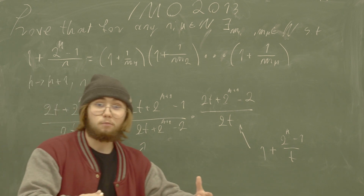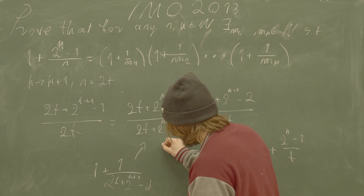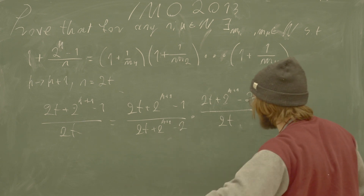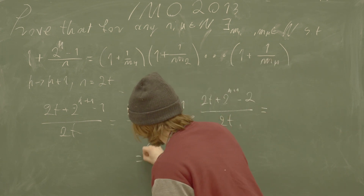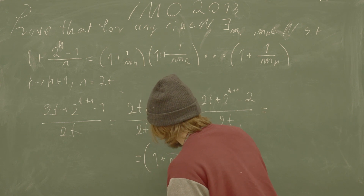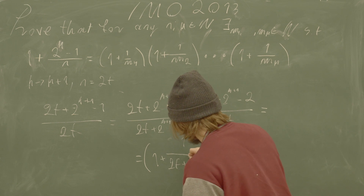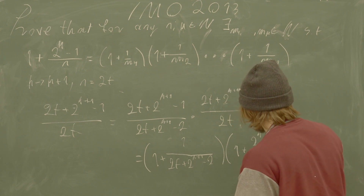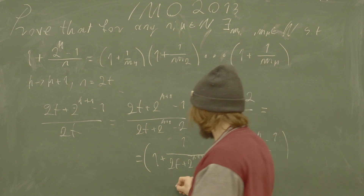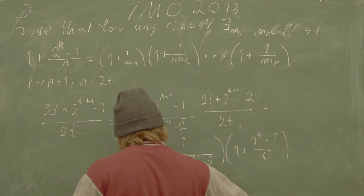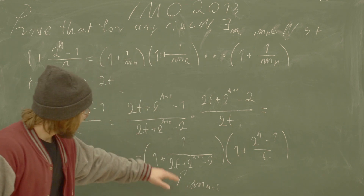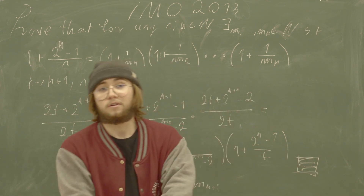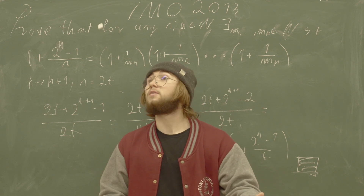So we got exactly the form we wanted: the expression becomes one plus one over two times t plus two to the power of k plus one minus two, multiplied by one plus two to the power of k minus one over t. We can use the inductive assumption here — just set the first m equal to two times t plus two to the k+1 power minus two — and I call this problem fully solved. Hope you enjoyed it, see you and goodbye.